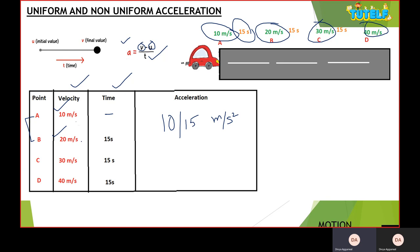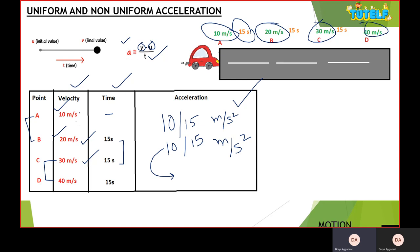For B to C, initial velocity is 20 m/s and final is 30 m/s, with a time interval of 15 seconds. The rate of change of velocity is again 10, giving 10 by 15 m/s². Similarly for C to D, initial velocity is 30 and final is 40 m/s, so acceleration is again 10 by 15 m/s². The acceleration is constant — the increase in velocity is 10 m/s in each equal interval of time. This is a uniform acceleration.